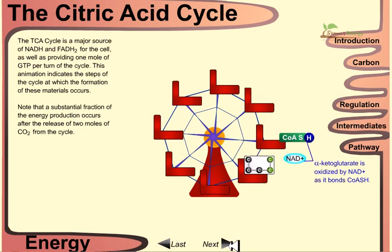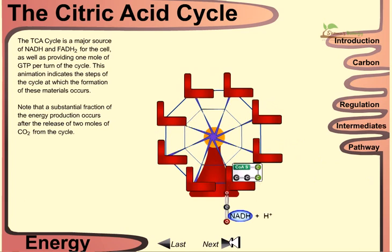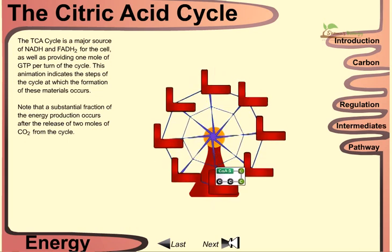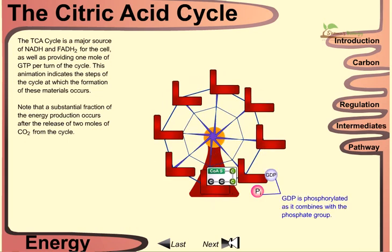In the second step, alpha-ketoglutarate is oxidized by NAD+ and bound to coenzyme A, producing succinyl-CoA. Carbon dioxide is released as NADH goes on to the respiratory chain, and production of ATP also occurs in this step.